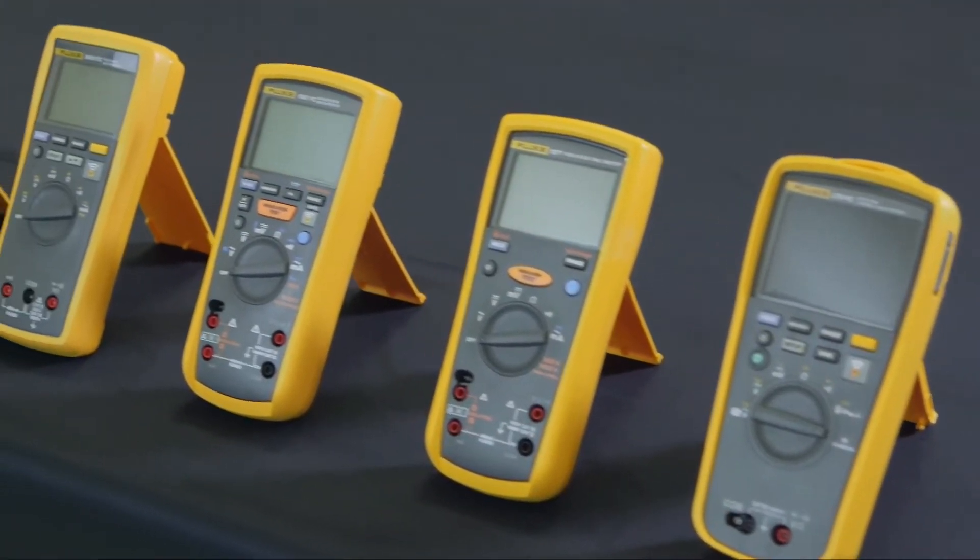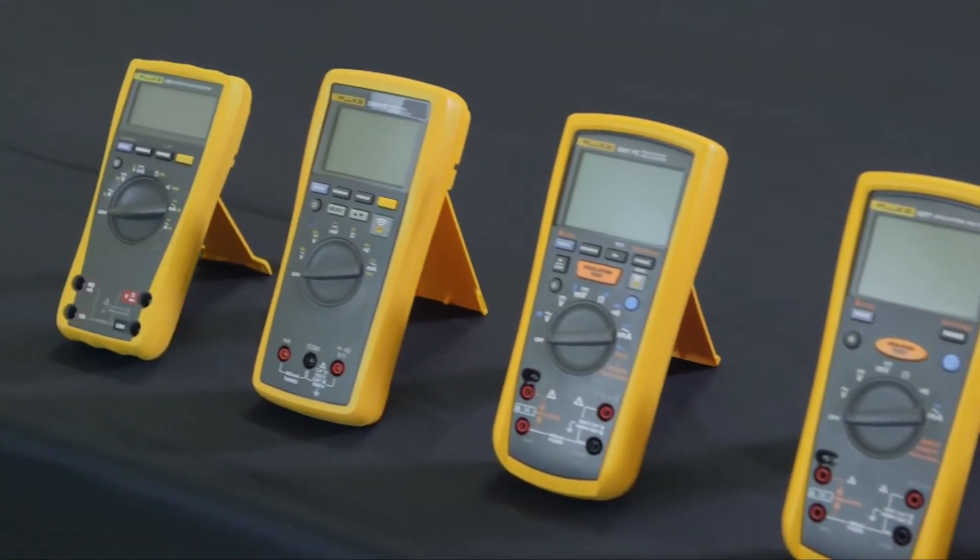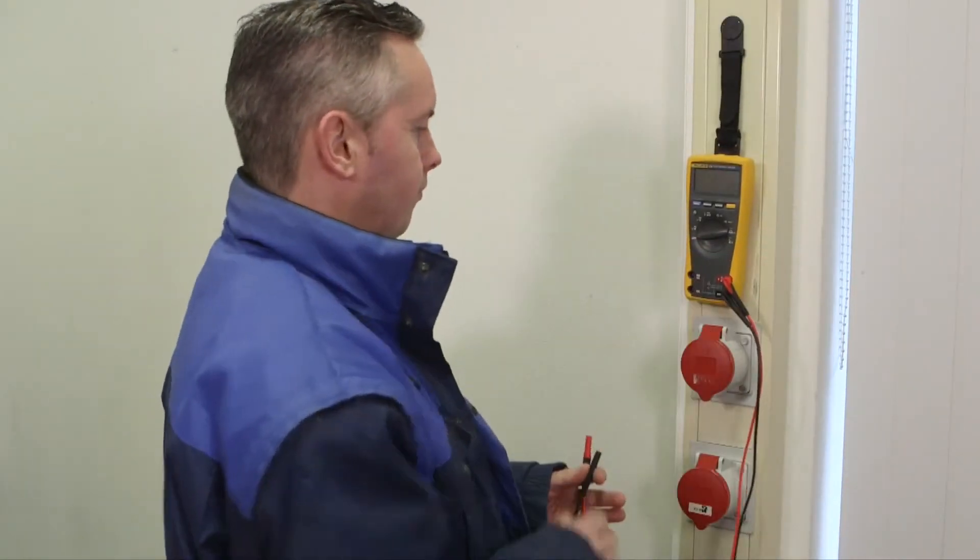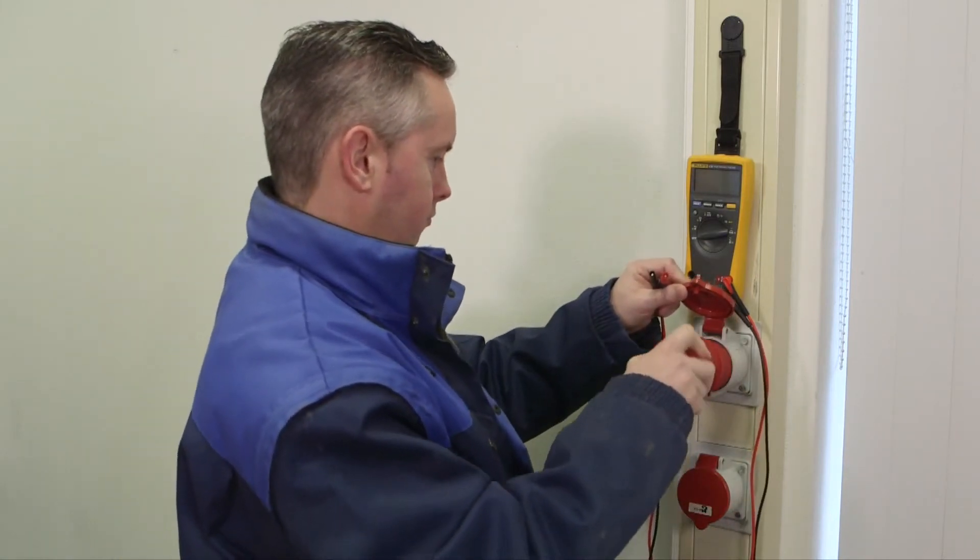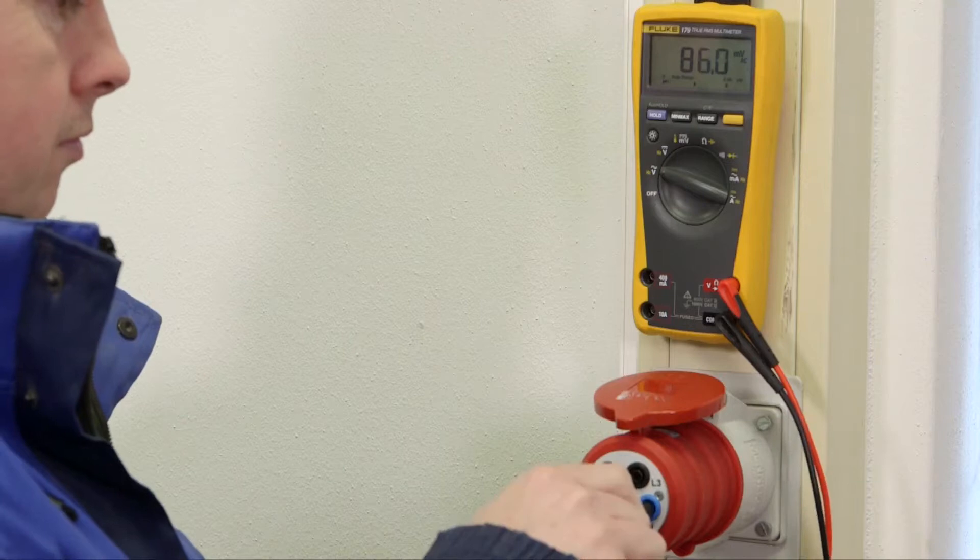We recommend the following multimeters for use in residential or commercial applications. The 179 is a versatile multimeter suitable for troubleshooting electronics as well as electrical systems up to 1000 volts AC or DC.